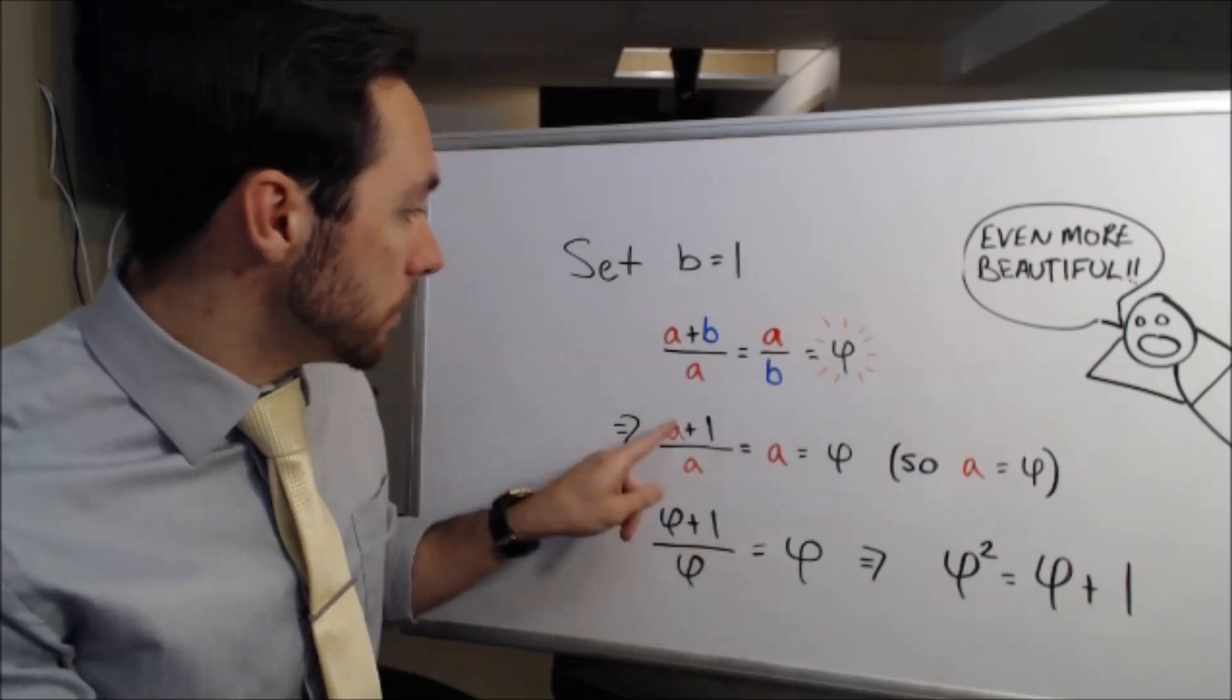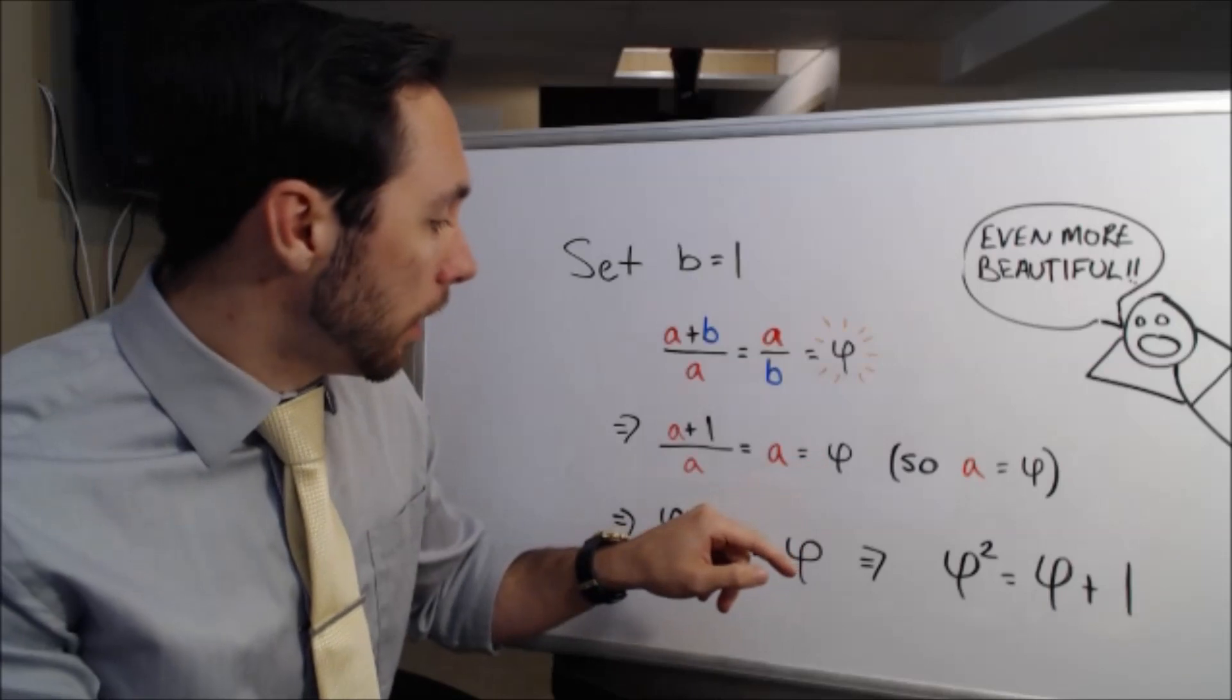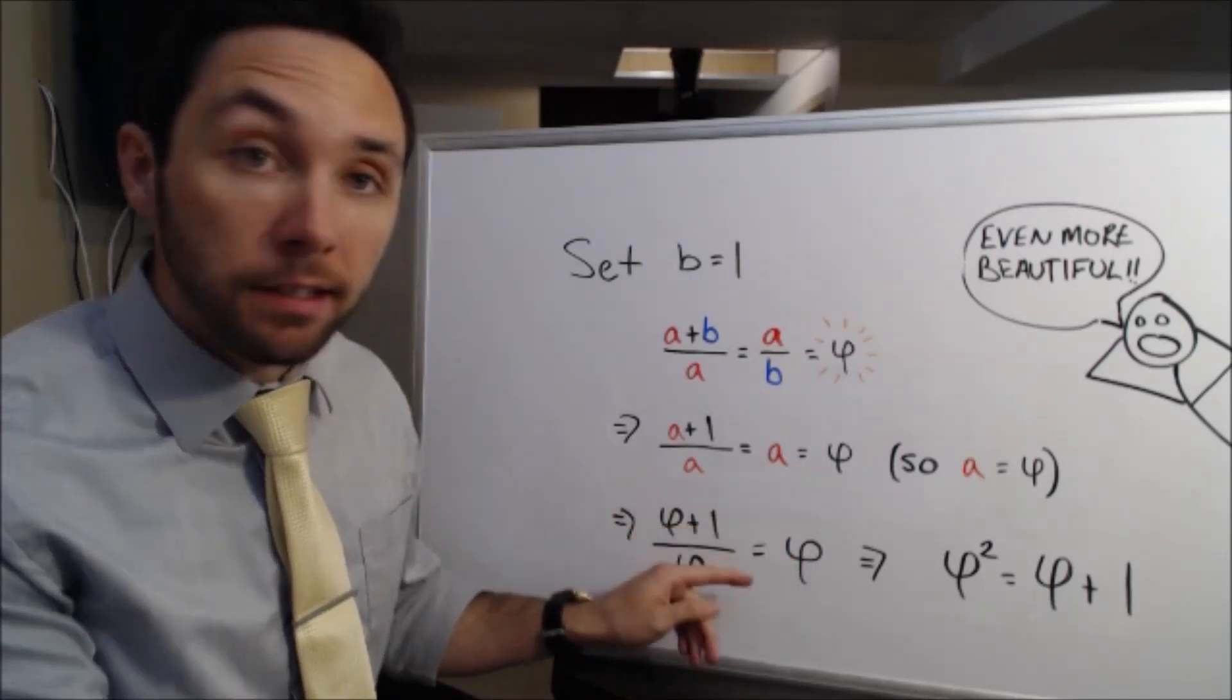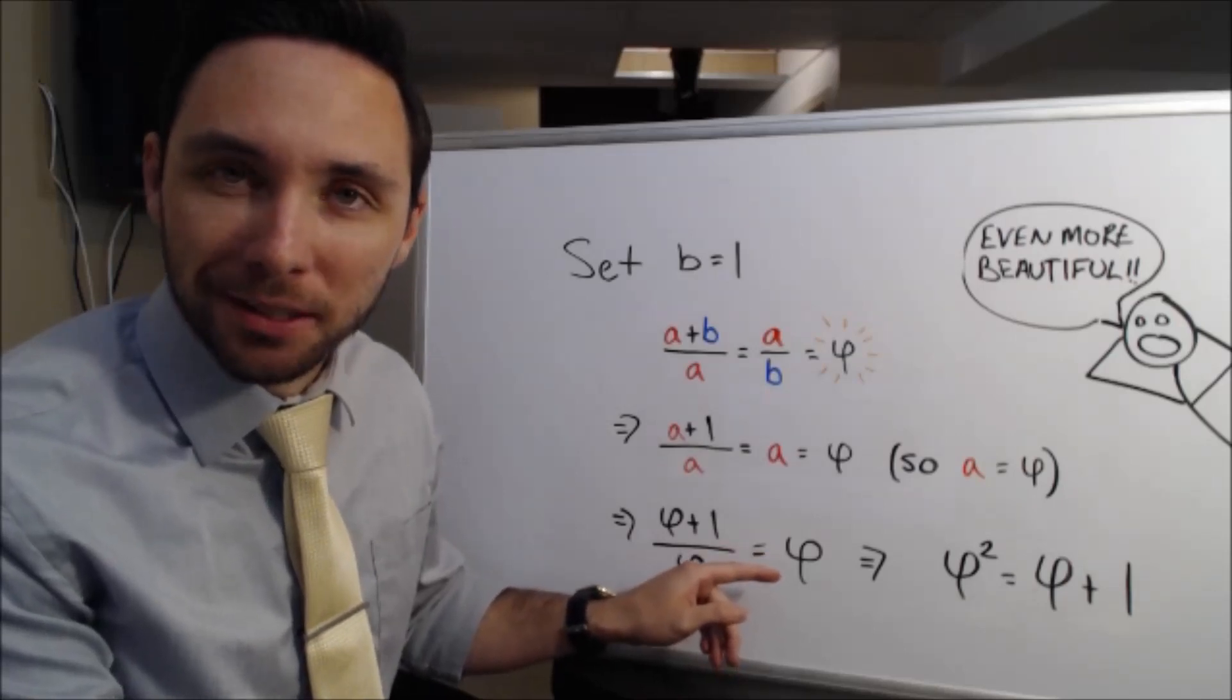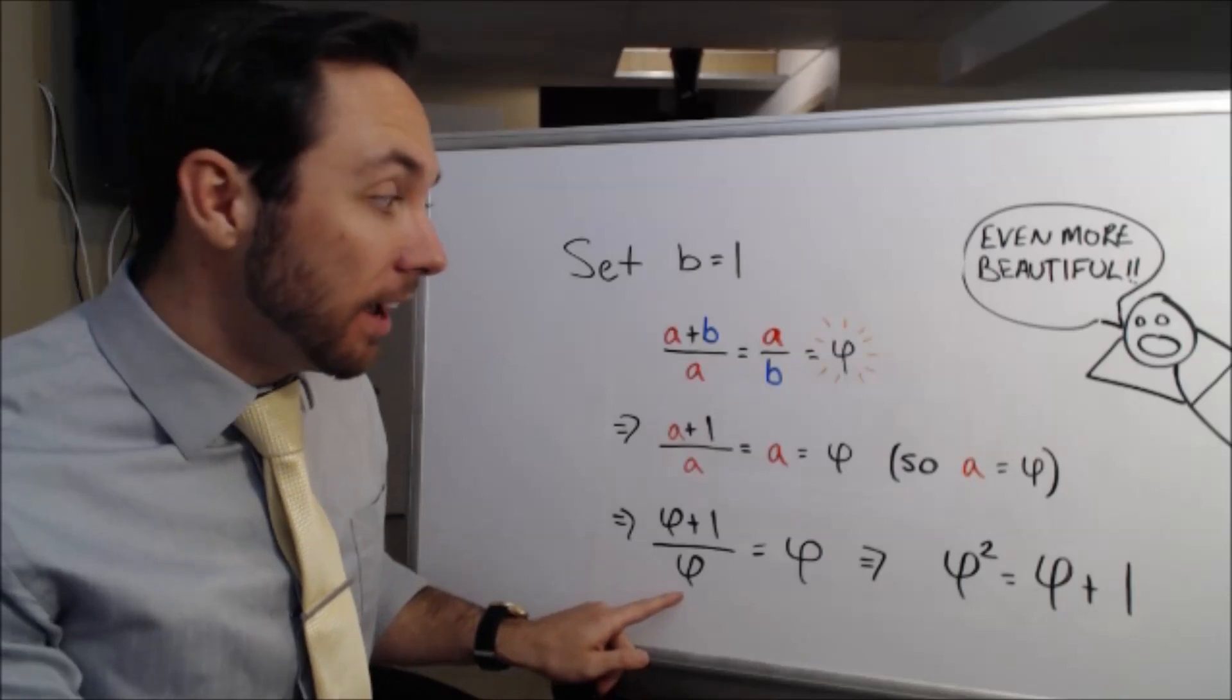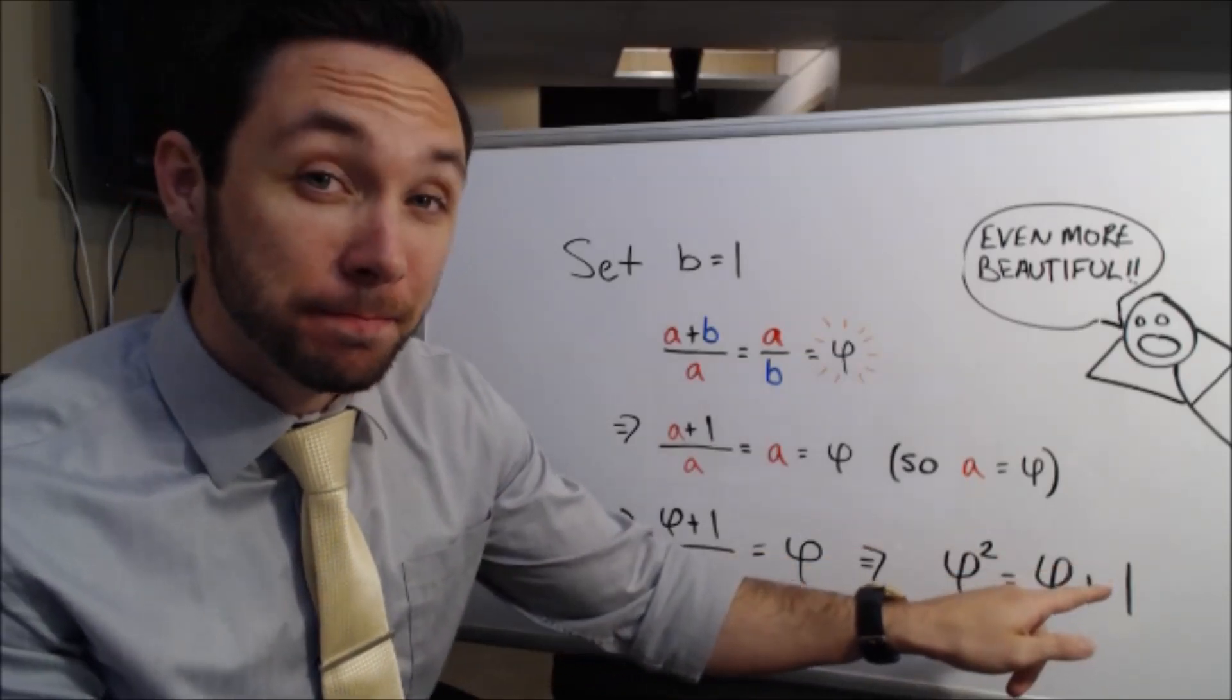I'm actually going to replace these A's with Phi, because I know A is equal to Phi. And all of a sudden, I now get this expression, Phi plus 1 over Phi is equal to Phi. Interesting. How about I square both sides by this denominator Phi, and I'll actually get Phi squared is equal to Phi plus 1.